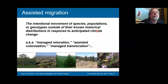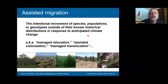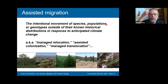Assisted migration — also called assisted colonization or managed relocation — is the intentional movement of species, populations, or genotypes out of their known historical distributions in response to anticipated climate change. We're trying to predict the future and act accordingly. People often think about species-level assisted migration, but it's also very important to consider assisted migration at the population level, which we'll discuss shortly.